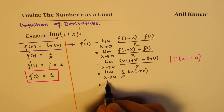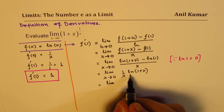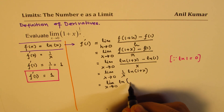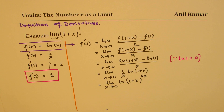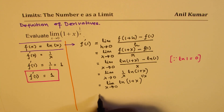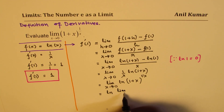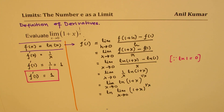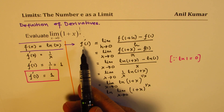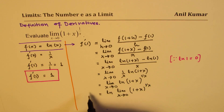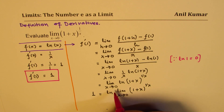Using the properties of logarithmic functions, the 1 over x goes into the exponent, so we could write limit x approaches 0 of ln[(1+x) to the power of 1 over x]. Using the properties of limits and logarithmic functions, we could also write this as ln of the limit x approaches 0 of (1+x) to the power of 1 over x. We know this whole expression is equal to 1, since f'(1) equals 1.